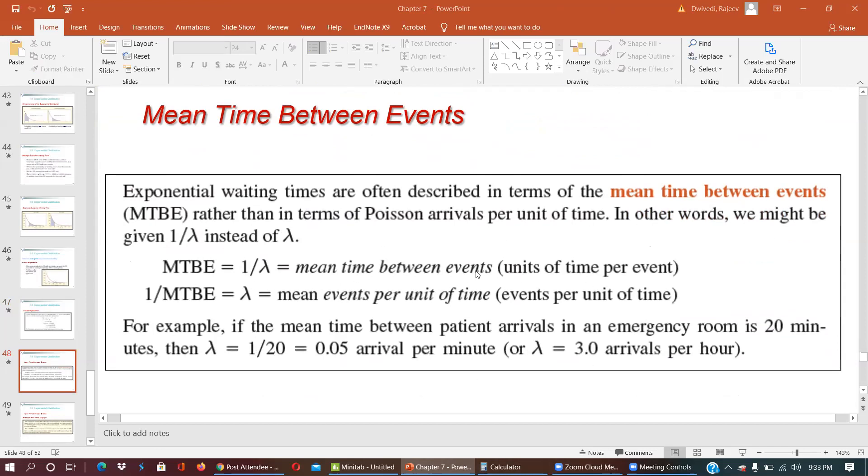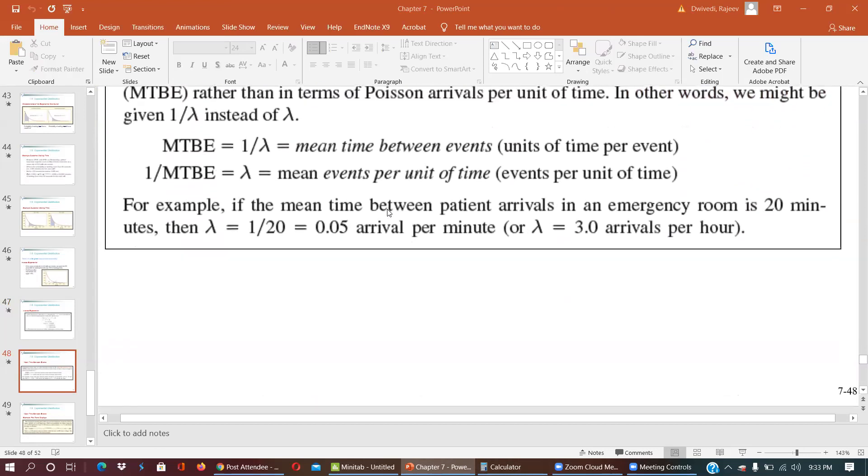1 upon lambda is mean time between events, units of time per event. 1 upon MTBE is lambda, which is lambda equal to 1 over y, or you can simply calculate and you can simply get the answer.